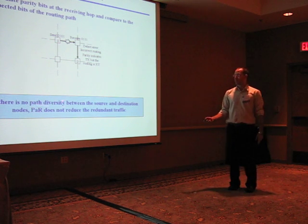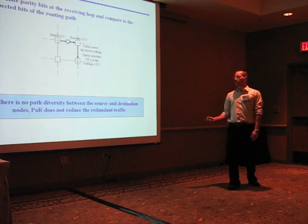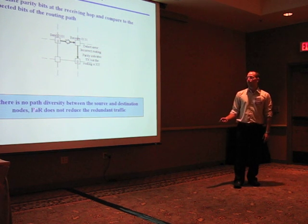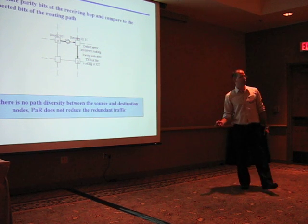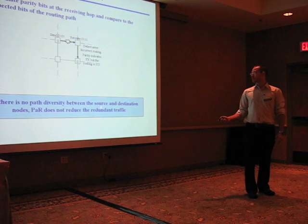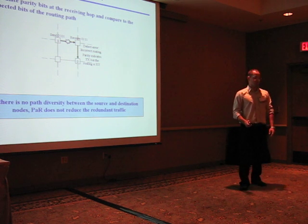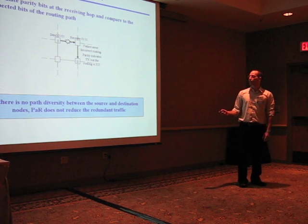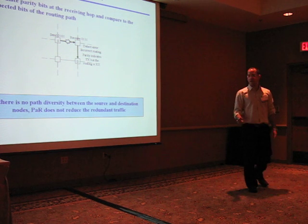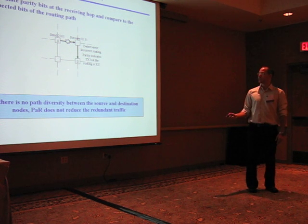Notice that if there is no path diversity between the source and destination nodes, the parity routing, referred as PART, does not reduce the redundant traffic. Only if we have edge diversity, path diversity, edge disjoint paths between the source and destination nodes.